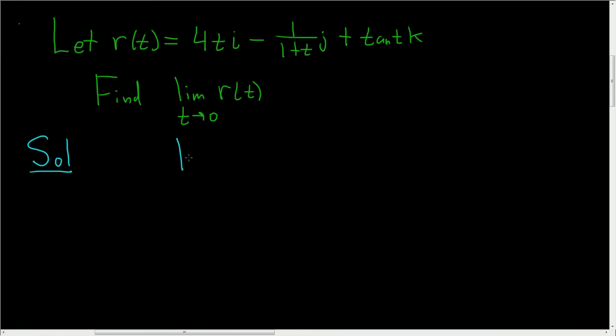We'll start by replacing r of t with what it actually represents. So this is the limit as t approaches 0 of 4ti minus 1 over 1 plus tj and the tangent of t times k.